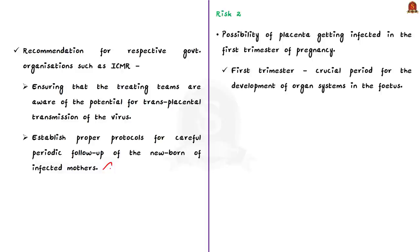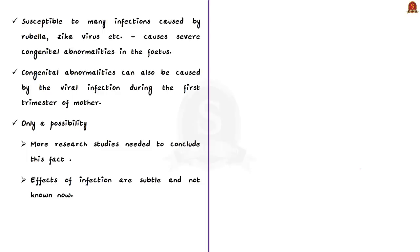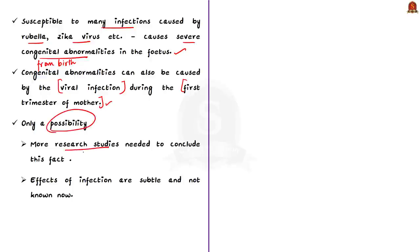There is another risk: the placenta can be infected in the first trimester of pregnancy. The first 12 weeks or three months of pregnancy are considered the first trimester — a crucial period for the development of organ systems of the fetus. This period is already susceptible to infections like rubella and Zika virus, which can cause severe congenital abnormalities in the fetus. The authors infer that congenital abnormalities in babies can also be caused by viral infection during the first trimester. This remains a possibility, as more research is needed, and because the effects are subtle — but based on the expertise of the authors, this cannot be fully discarded.